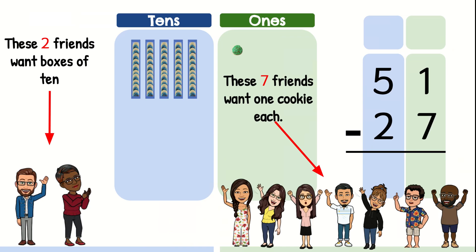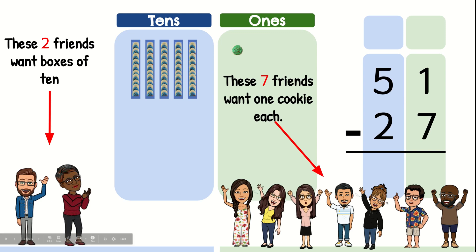These two friends want boxes of 10 — that will be 10, 20. These seven friends want one cookie each, so that will be 10, 20, 21, 22, 23, 24, 25, 26, 27. That's where we get our number 27 from.